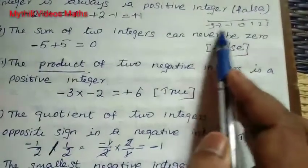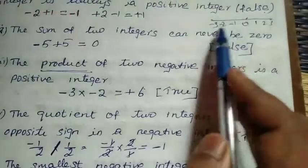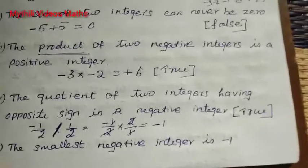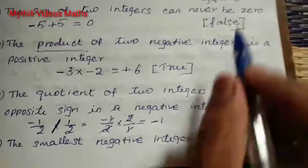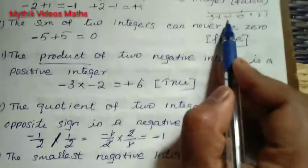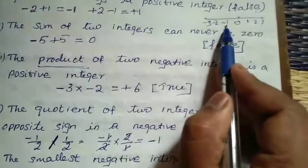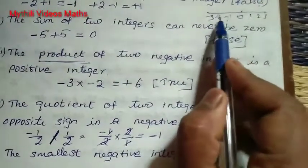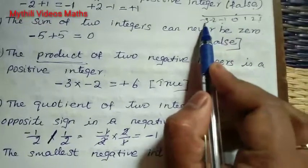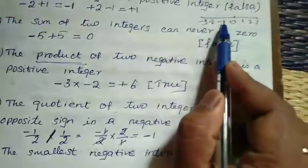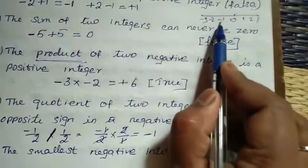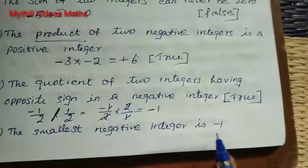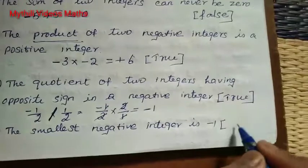On the number line: 0, then 1, 2, 3 on the right, and minus 1, minus 2, minus 3 on the left. The statement says the smallest negative integer is minus 1. But minus 1 is actually the biggest negative integer. Minus 2, minus 3 are smaller. So this statement is false.